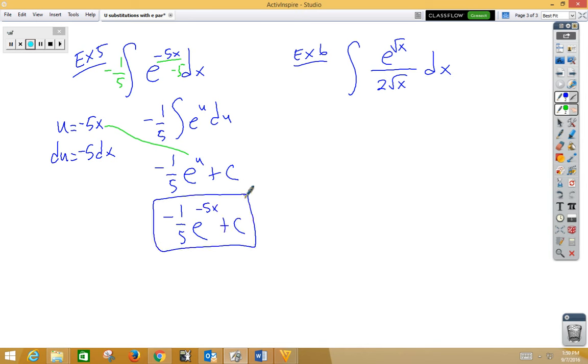In our last example, this looks a little bit tricky, but it's about the same. Our exponent is now root x. So if u is root x, du, the derivative of root x would be 1 over 2 root x dx. Now if you look, we have that right here.